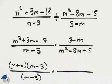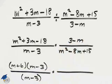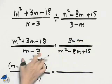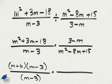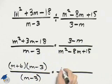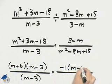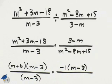Now, the numerator of the second fraction is 3 minus m, which is already factored. But I make an observation that 3 minus m is the same as the opposite of m minus 3, so I could actually factor out a negative 1 and write negative 1 times m minus 3.